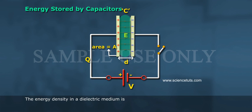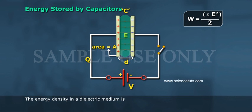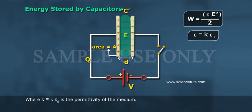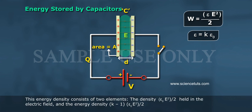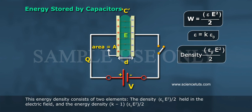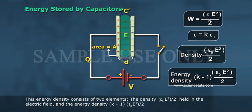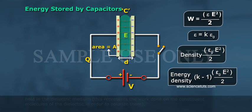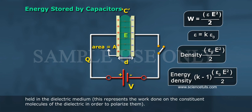The energy density in a dielectric medium is W = ε·E²/2, where ε = k·ε₀ is the permittivity of the medium. This energy density consists of two elements: the density ε₀·E²/2 held in the electric field, and the energy density (k−1)·ε₀·E²/2 held in the dielectric medium. This represents the work done on the constituent molecules of the dielectric in order to polarize them.